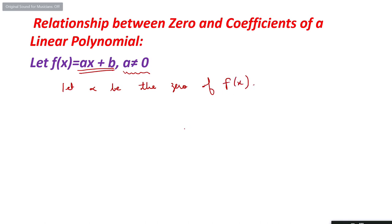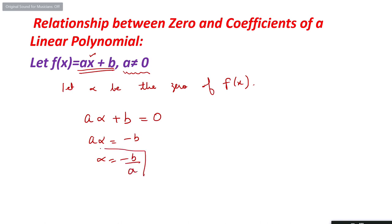If alpha is the zero, then substituting x = alpha must make the polynomial equal to zero. That means the value of alpha is minus b divided by a. This is a very important concept. In the case of a linear polynomial, there is a single zero and its value equals minus b upon a.